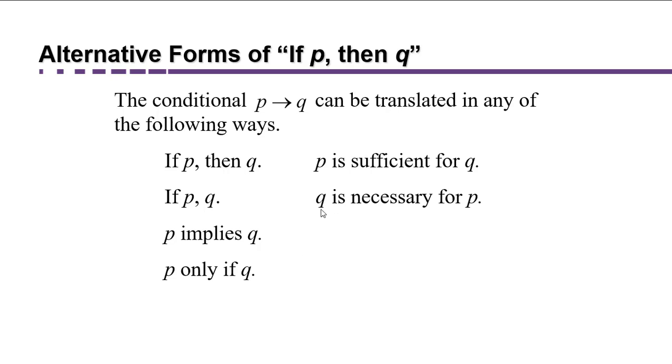We might also say Q is necessary for P to happen, and this still has the same logical implication. This one is particularly challenging because notice that the consequent Q actually comes before the antecedent P when we write it in this form. We can also say all P's are Q's or Q happens if P happens. This is not an exhaustive list but these are the common ways that we see the conditional stated.